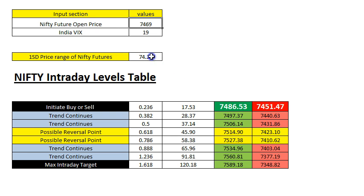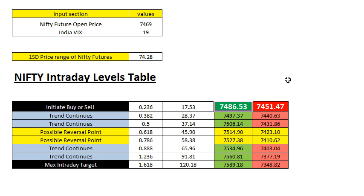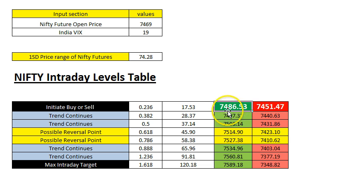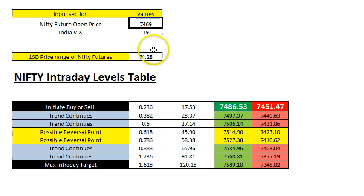Once you get this range, it automatically loads the Fibonacci levels and calculates the important levels to go long or go short. The logic to go long or go short is that you load a 5-minute chart and the 5-minute close should be above 7486, for example. Today I have loaded the Nifty spot value which you can get from Google Finance.